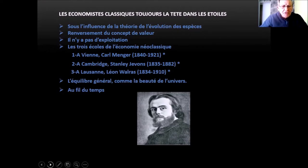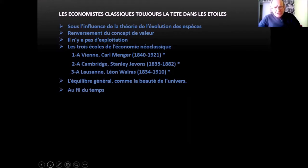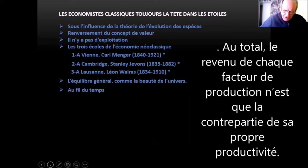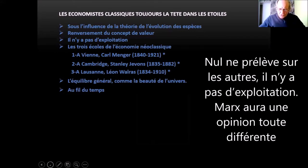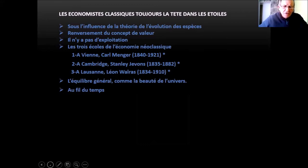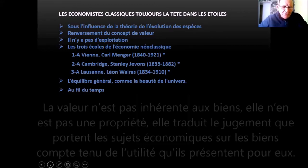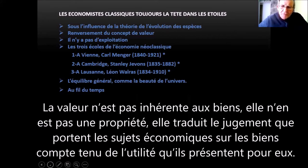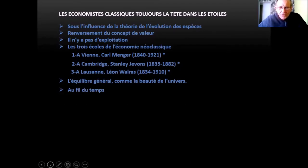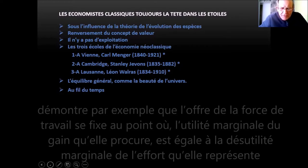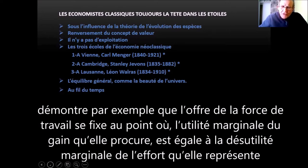Dans l'économie néoclassique, il n'y a pas d'exploitation parce que le revenu de chaque facteur de production n'est que la contrepartie de sa propre productivité. À Vienne, Karl Menger a une approche plutôt psychologique : la valeur n'est pas inhérente au bien, elle traduit le jugement que portent les sujets économiques sur les biens compte tenu de l'utilité qu'il présente pour eux. Cette école de Vienne aura des successeurs illustres comme Von Mises et Hayek, qu'on retrouvera dans les années 80. À Cambridge, Jevons utilise les mathématiques et démontre que l'offre de force de travail se fixe au point où l'utilité marginale du gain est égale à la désutilité marginale de l'effort.